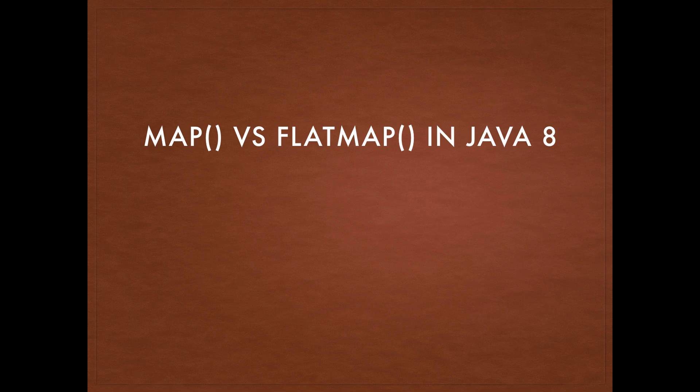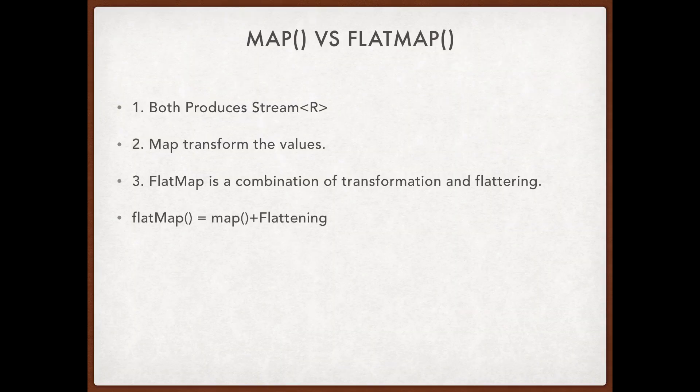In some cases flatMap makes sense, in some cases you can do everything using a map function. There are certain use cases where you need a combination of map and flatMap — you first transform things with map and then use flatMap to flatten out the output. Now, before we get into it, there are quite a few similarities between map and flatMap: both take a stream as input and both produce a stream of R as output.